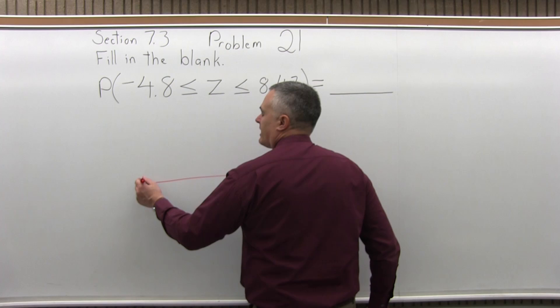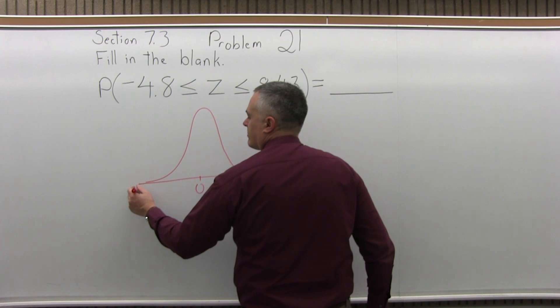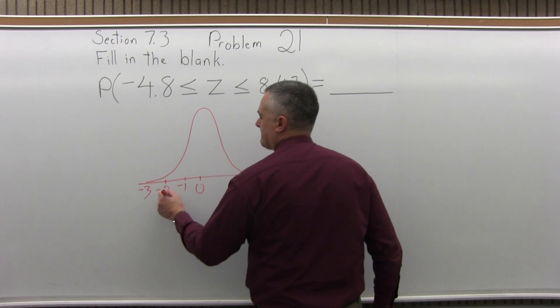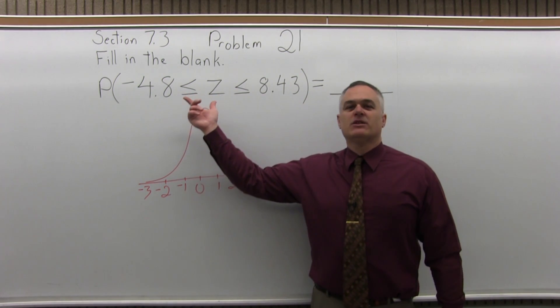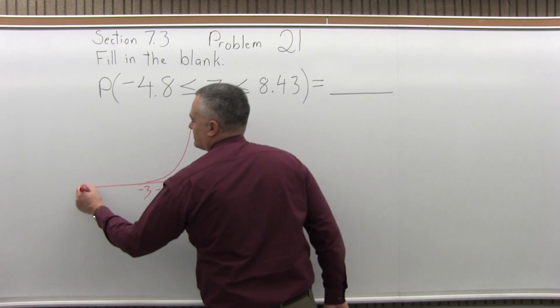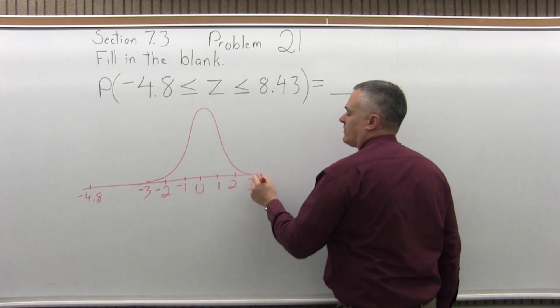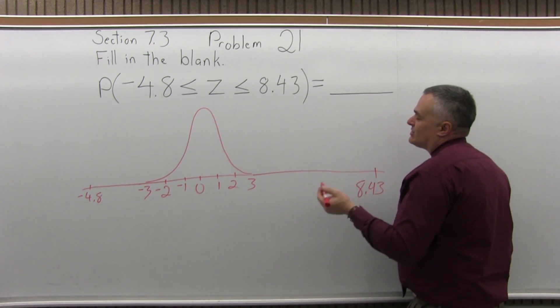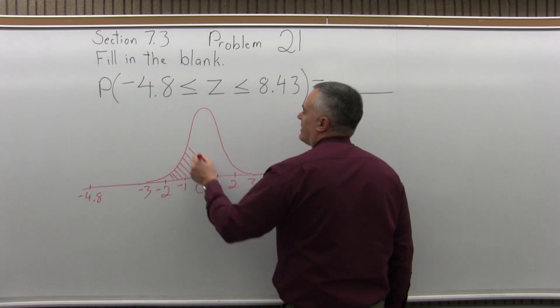So if we look at the bell curve, let's do a quick sketch. What's happened is we've gone way off the end on both sides. So negative 4.8 is pretty far to the left and positive 8.43 is very far to the right. So the probability of being in between those takes up the entire bell curve.